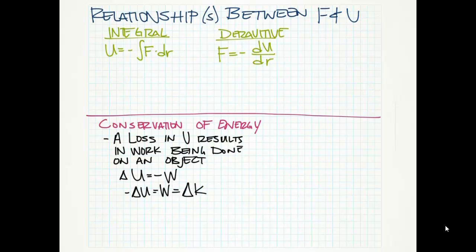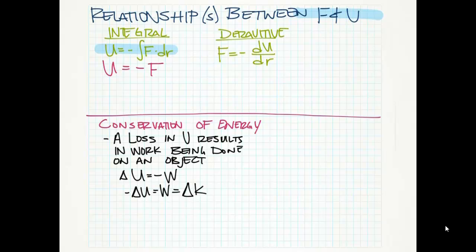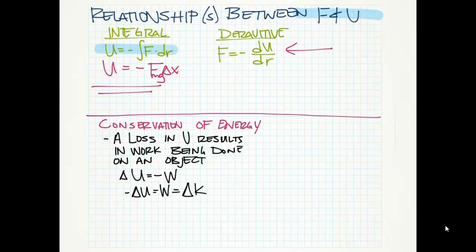The next thing we're going to look at is the relationship between force and potential energy — and I realize it's a little unfortunate to have it be between F and U, but too bad. The integral relationship is what we just talked about: the potential energy is equal to the negative integral of force dotted with dr. The way we would have said that last year is that the potential energy is equal to negative F delta x. So, working backwards from that integral relationship.